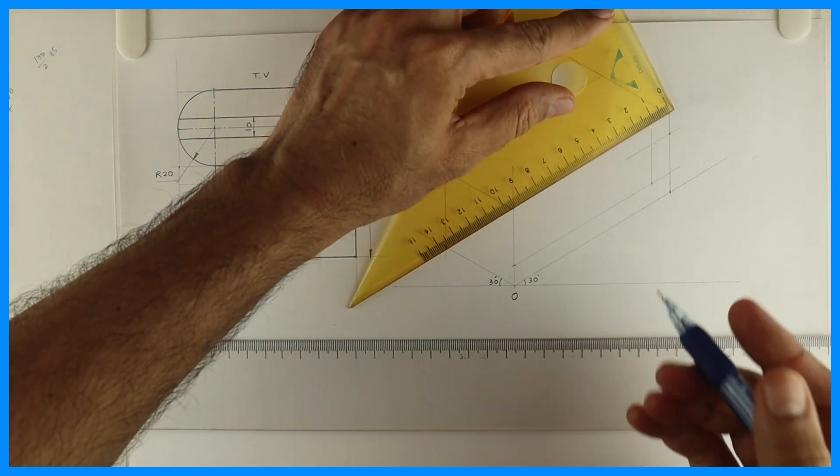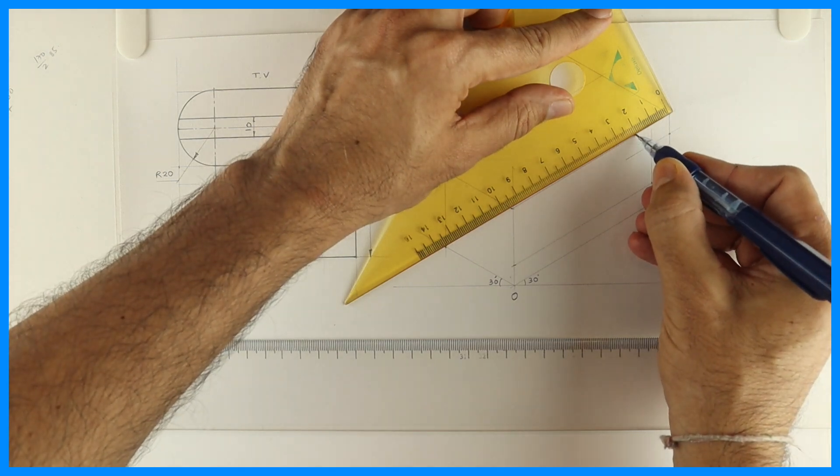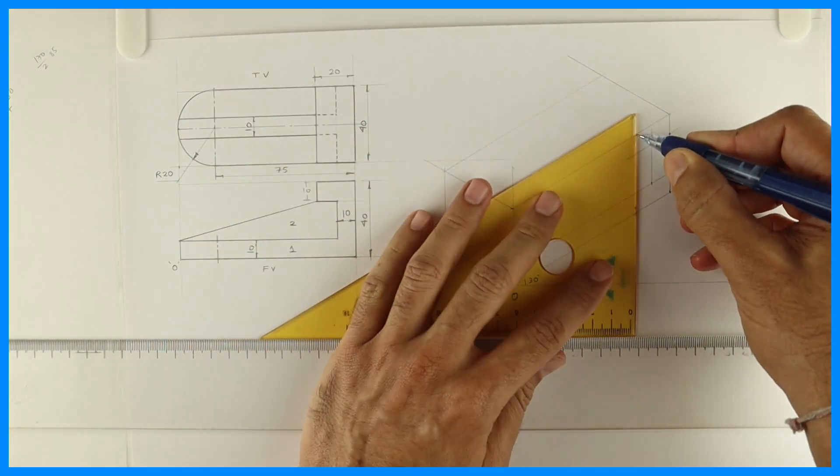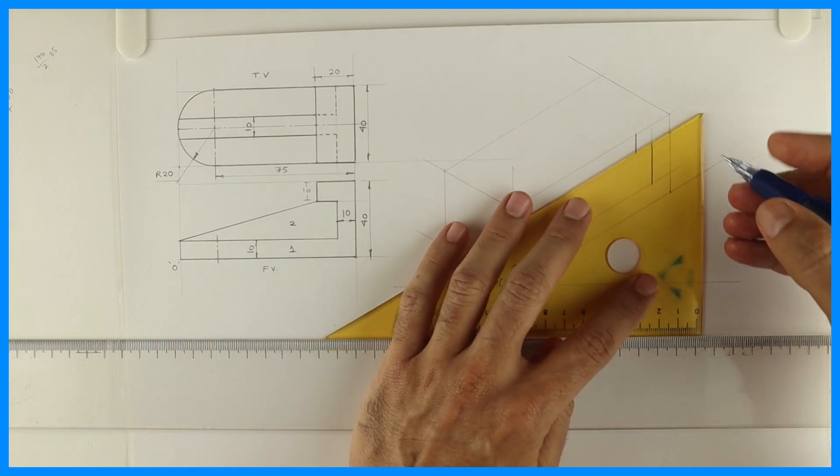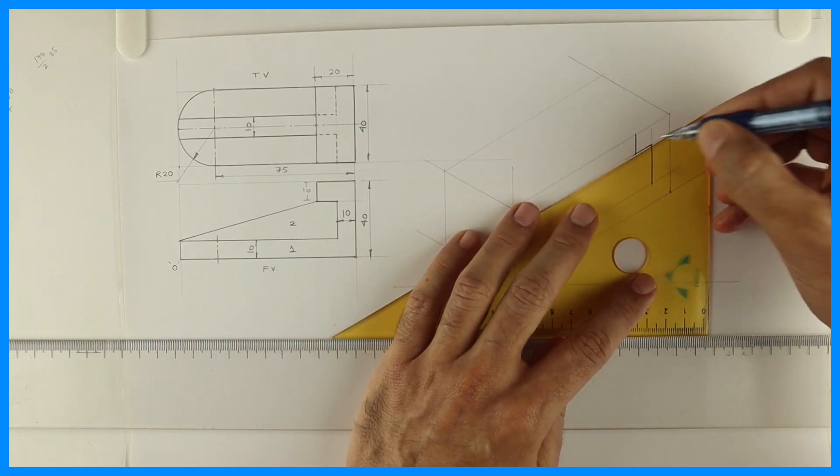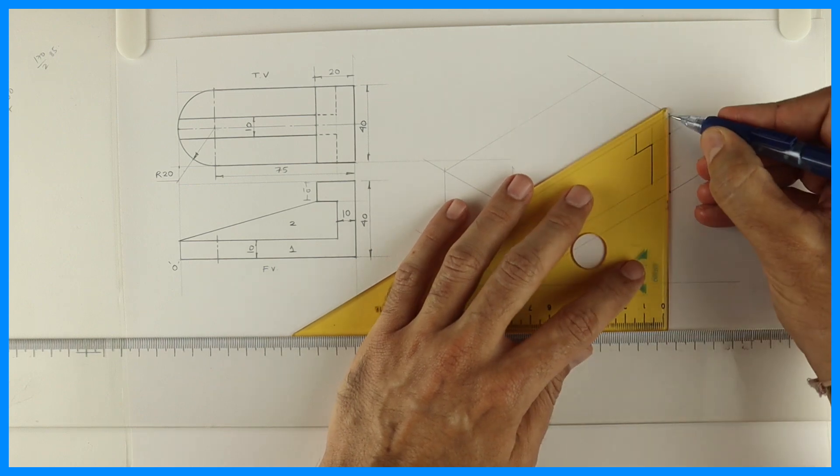Now if you see, how much is this? 20. So you take 20 and you go down. This is how you will get your first part. Remember one thing - whatever is there in the front, the same thing is behind.